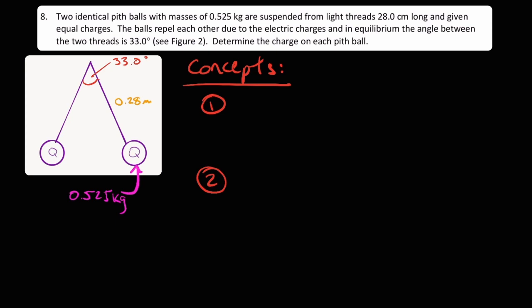It's actually one of my favorite questions from the term because it combines concepts from a few different chapters. It poses two identical pith balls with the mass of 0.525 kilograms, which I have drawn here and here, are suspended from light threads 28.0 centimeters long, which I have converted to 0.28 meters already here.